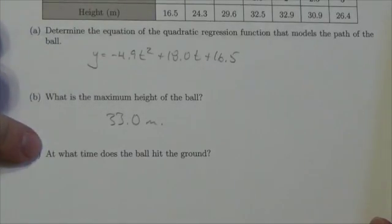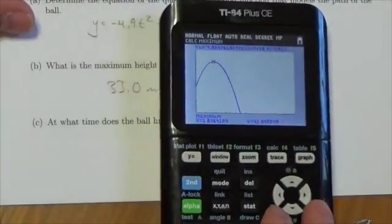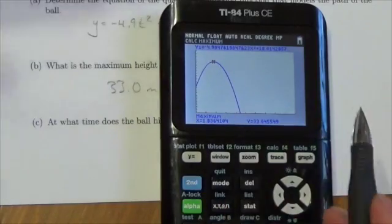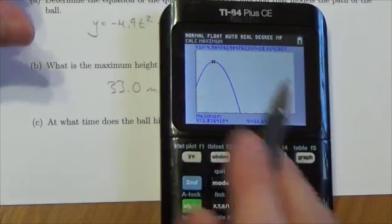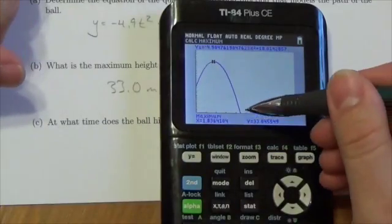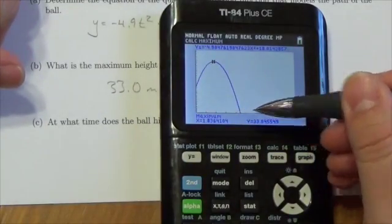The next question is, at what time does the ball hit the ground? Well, it makes sense to me to see this, especially based on my window settings, that the bottom of the screen here would correspond with the ground. So I'm looking for that x-intercept.